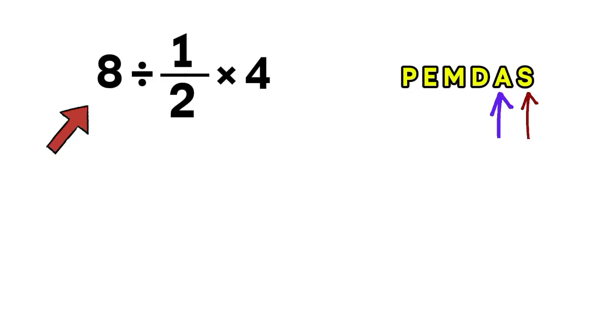So in our expression, we only have division and multiplication, no parentheses or exponents. And since multiplication and division have equal priority, we must solve them from left to right, not just in any order we like.